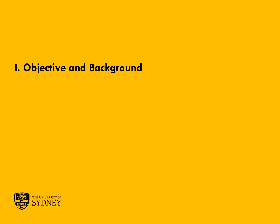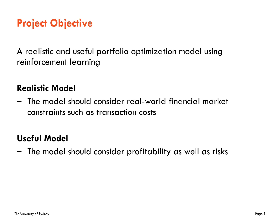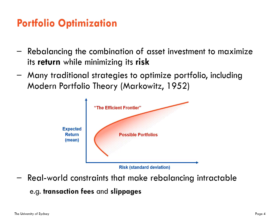First, the objective and the background. The aim of this project is to examine a realistic and useful portfolio optimization model using reinforcement learning. By realistic, I mean considering real-world constraints like transaction costs. Also, useful models should be profitable as well as safe.